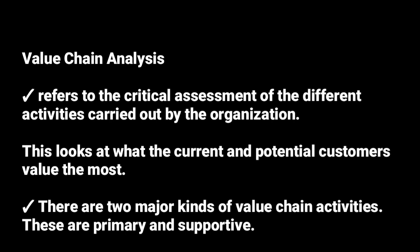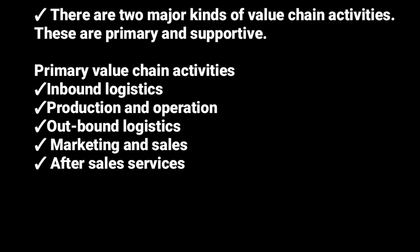The activities performed by the organization are categorized into two: we have the primary activities and the secondary activities, also known as the supportive activities. We shall first look at the primary value chain activities, and these are five. Primary value chain activities are activities that are concerned with the direct physical creation of a product. The first one is inbound logistics.